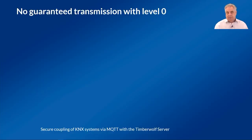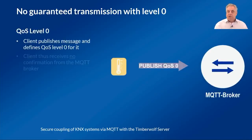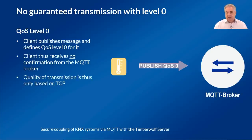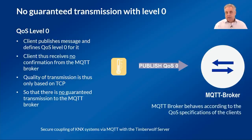QoS level 0 is the default level and the one with the worst quality of service. The client publishes a message to the broker marked with QoS level 0 and receives no confirmation from the broker that the message has arrived and is being processed. The quality of the transmission is thus only ensured by the deeper protocol layer TCP. The transmission is not secured because the client does not receive an acknowledgement from the broker. For most cases, QoS level 0 and securing the connection via TCP is sufficient.